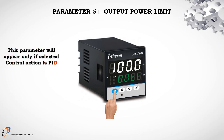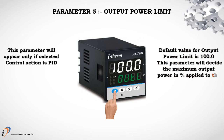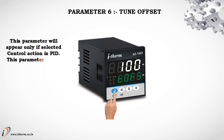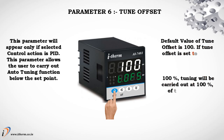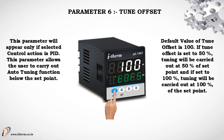Parameter 5: Output Power Limit. This parameter will appear only if the selected control action is PID. Default value for output power limit is 100.0. This parameter decides the maximum output power in percent applied to the load. Parameter 6: Tune Offset. This parameter allows the user to carry out auto tuning below the set point. Default value is 100. If set to 50%, tuning will be carried out at 50% of the set point; if set to 100%, tuning will be carried out at 100% of the set point.